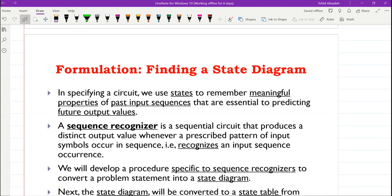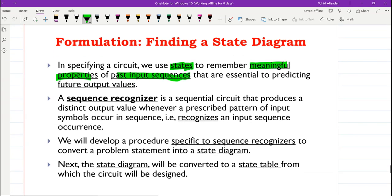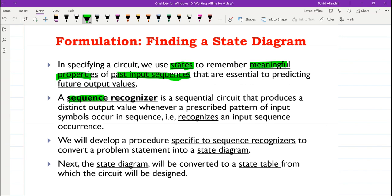When we want to specify a circuit, we use the states to remember meaningful properties of the past input sequences which are essential to predicting the future output values. We'll go through an example of a sequence recognizer soon. To introduce it to you, a sequence recognizer is a sequential circuit which produces a distinct output value whenever a prescribed pattern of input symbols occur in sequence.